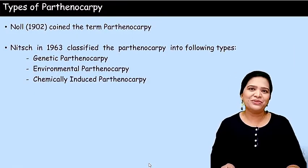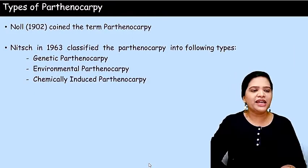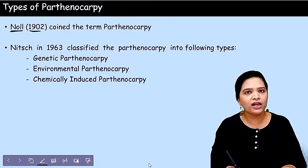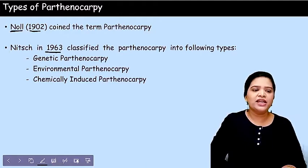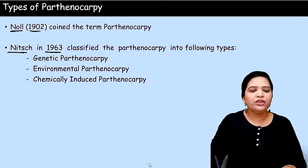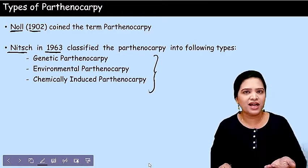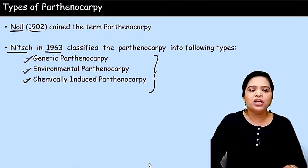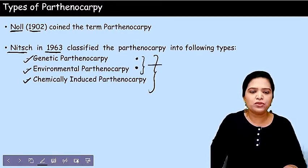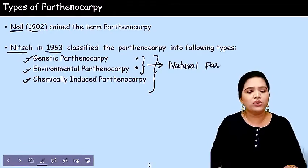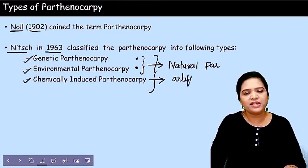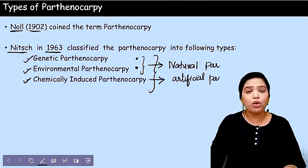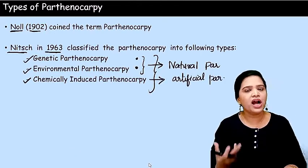The term parthenocarpy was coined in 1902 by Nall. In 1963, Nitz classified parthenocarpy into three categories depending upon how it occurs: the first is genetic parthenocarpy, the second is environmental parthenocarpy, and the third is chemically induced parthenocarpy. Genetic and environmental parthenocarpy are natural parthenocarpy, whereas chemically induced parthenocarpy is artificial parthenocarpy — we are inducing it voluntarily in plants.